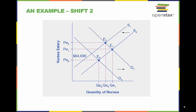Initially, salaries increase as demand for nurses increases to PE1. When demand increases, so too does the equilibrium quantity from QE0 to QE1.